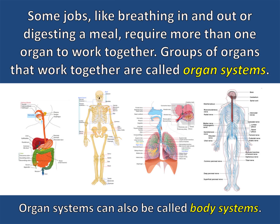Some jobs, like breathing in and out or digesting a meal, require more than one organ to work together. Groups of organs that work together are called organ systems. You can see here that the digestive system, skeletal system, respiratory system, and nervous system all contain multiple organs. It's important to understand that organ systems can also be called body systems.